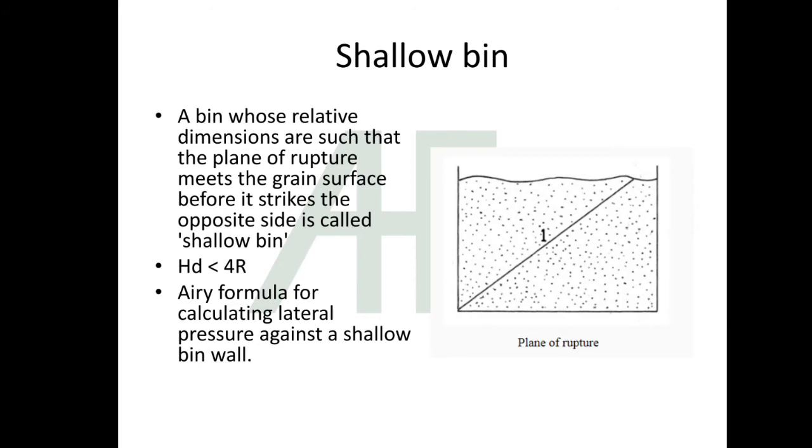Shallow bin: a bin whose relative dimensions are such that the plane of rupture meets the grain surface before it strikes the opposite side is called shallow bin. From the image we can understand - the line denoted is the plane of rupture.